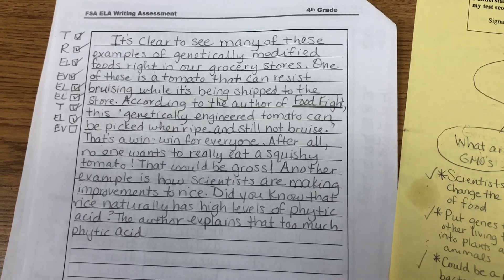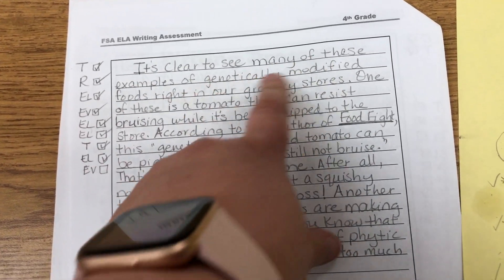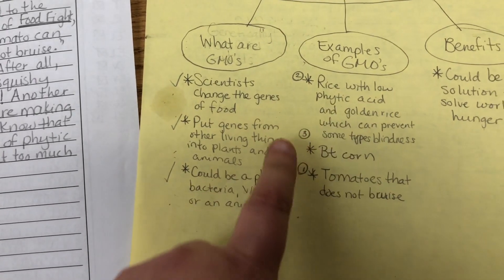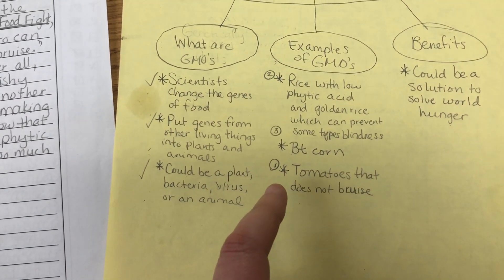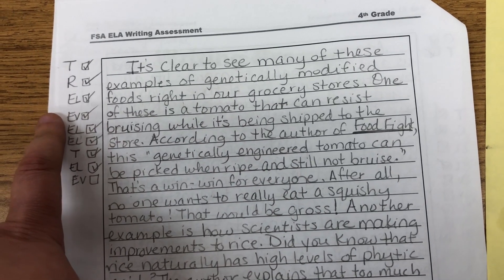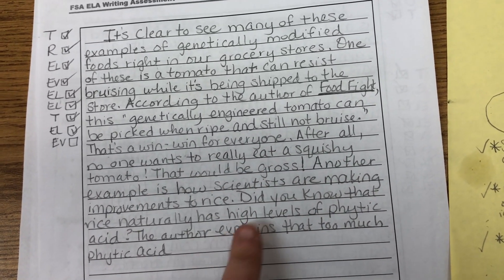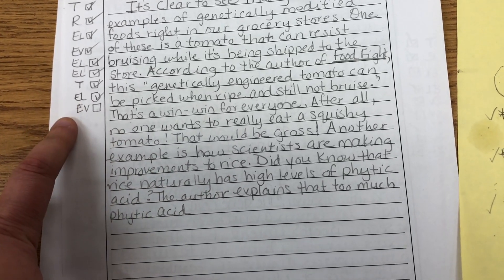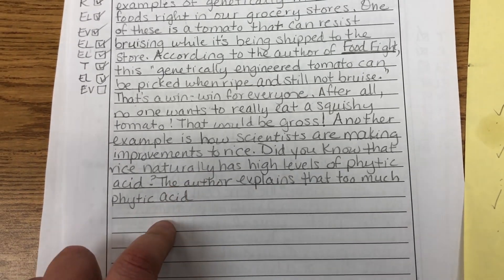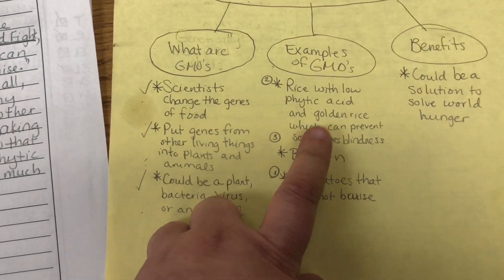The first paragraph explained what GMOs were. The second paragraph shows some examples. We started with a transition and the reason or idea about examples of genetically modified foods. We decided to focus on three examples, numbered in order: tomatoes first, then rice, then Bt corn. For tomatoes we gave elaboration, evidence, and then elaboration. Then for rice — another example — we started with elaboration and gave evidence that too much phytic acid is not good for humans, and how scientists have engineered a type of rice that is low in phytic acid. We'll also talk about the rice that can prevent some forms of blindness.